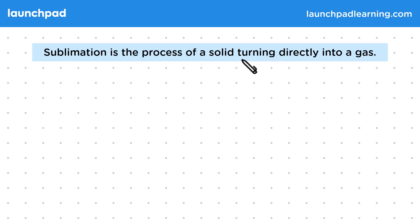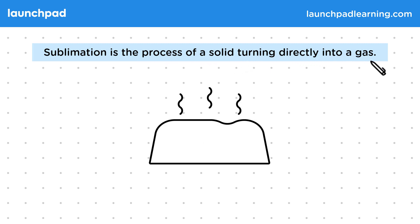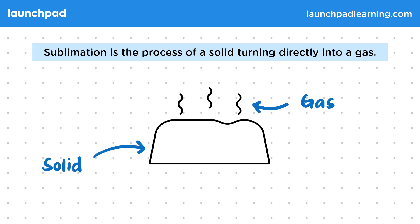Sublimation is the process of a solid turning directly into a gas. In the sublimation process, the solid does not change to a liquid — it changes directly to a gaseous state, which forms at the top of the solid. This is a rare process, and you aren't expected to know examples of sublimation for your exam. You'll be told when sublimation is occurring or the states involved in given examples.